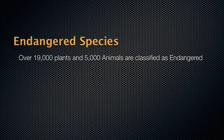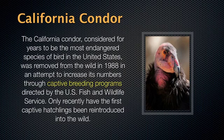Endangered species number one: the California condor. It's considered for years to be the most endangered species of bird in the United States. It was removed from the wild in 1988 in an attempt to increase its numbers through captive breeding programs directed by the U.S. Fish and Wildlife Service. Only recently have the first captive hatchlings been reintroduced into the wild — a relatively successful reintroduction program.